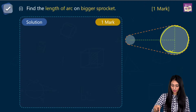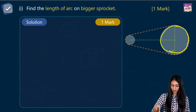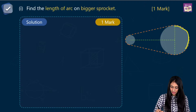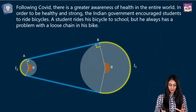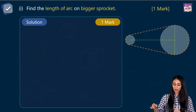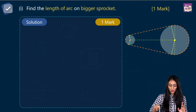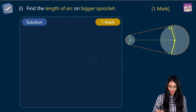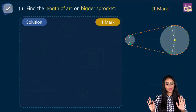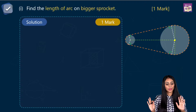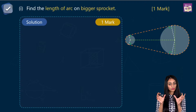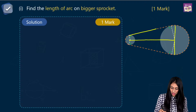To find L1, the length of arc on the bigger sprocket: the formula is theta by 360 into 2 pi R1. To find theta, the straight line gives 180 degrees. The two remaining angles BCI and DCG are equal. Since radius and tangent are 90 degrees and the given angle is 80 degrees, angle BCI equals 90 minus 80 equals 10 degrees. So theta equals 180 plus twice of 10 equals 200 degrees.